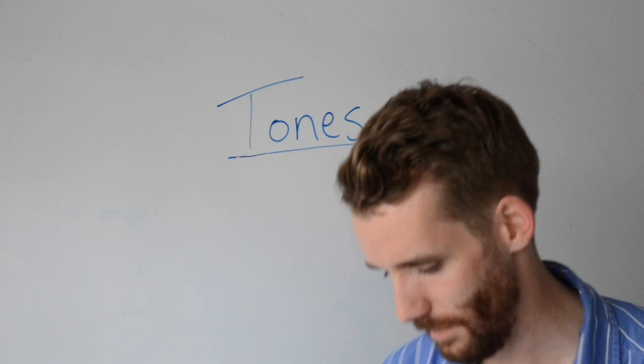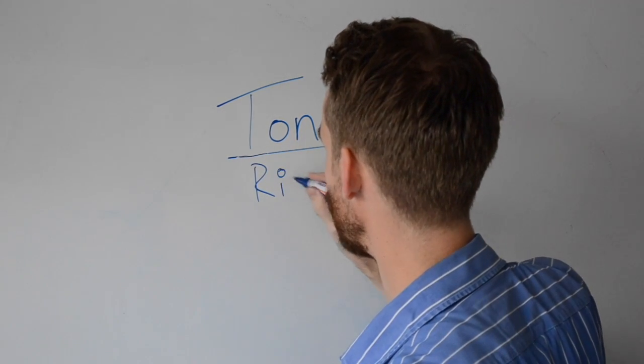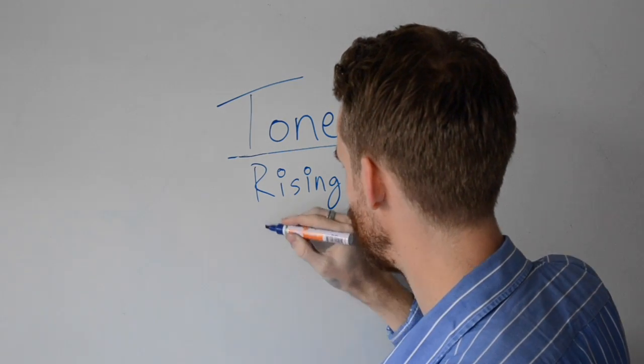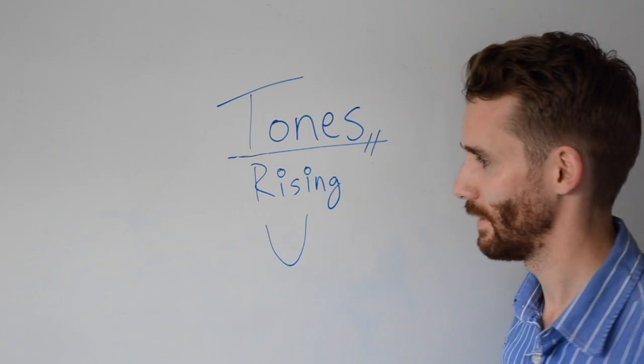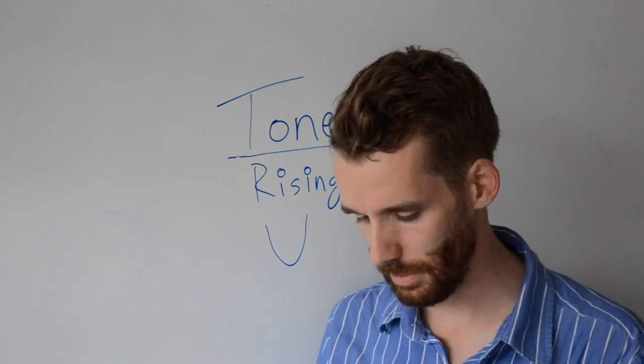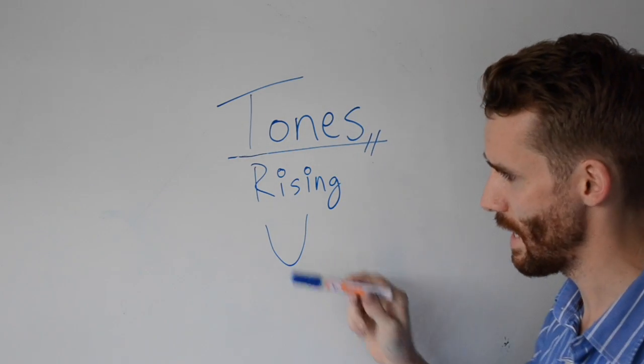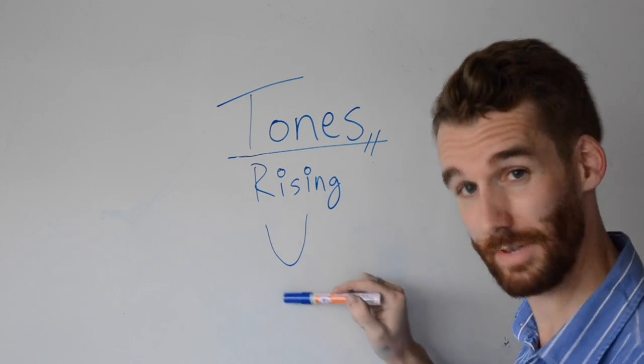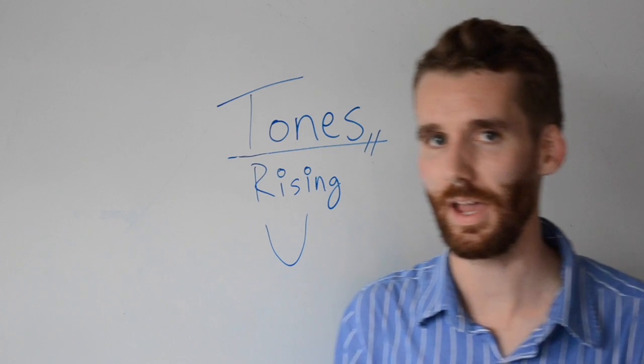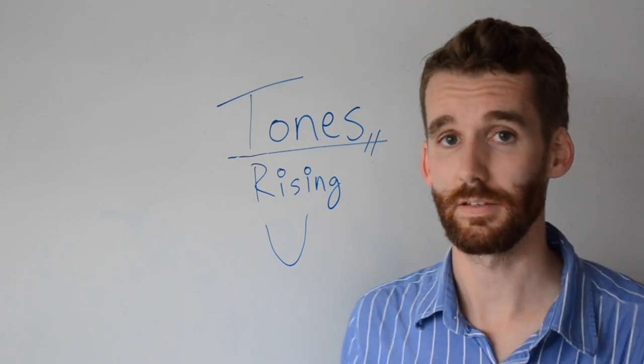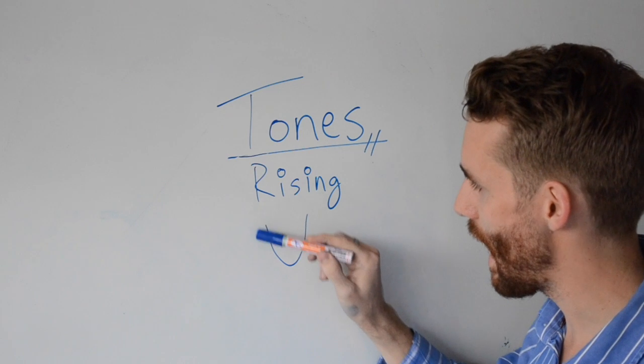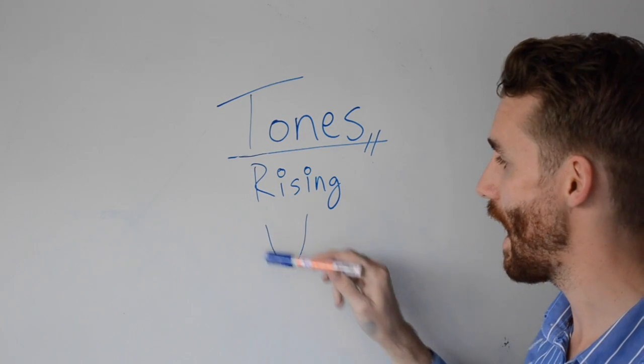And then the last of the five is a rising tone. This one may seem the most unnatural. I represent this one with like a V or a U shape. And a rising tone is going to go down. It's going to dip down. So think of it dipping down and then coming back up. So a rising tone put to the word high would sound something like this. High. High. So I'm going down. High. And then coming back up. High.